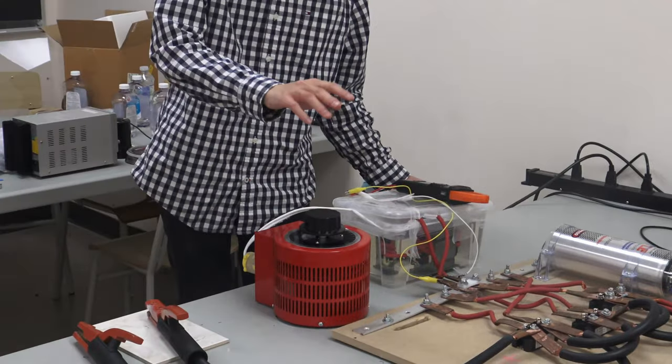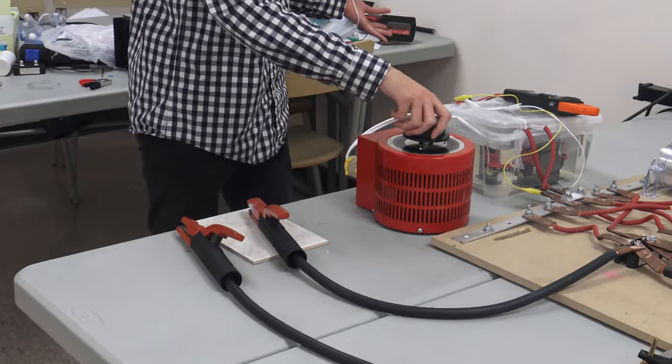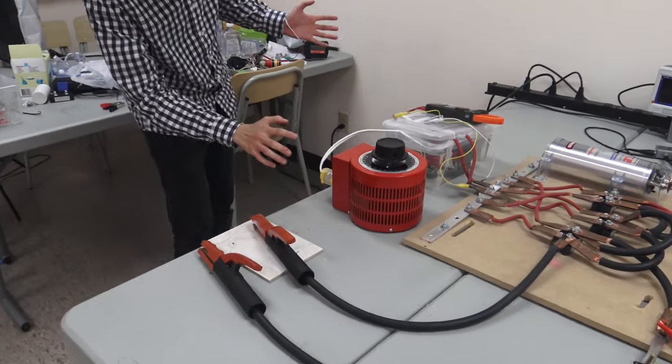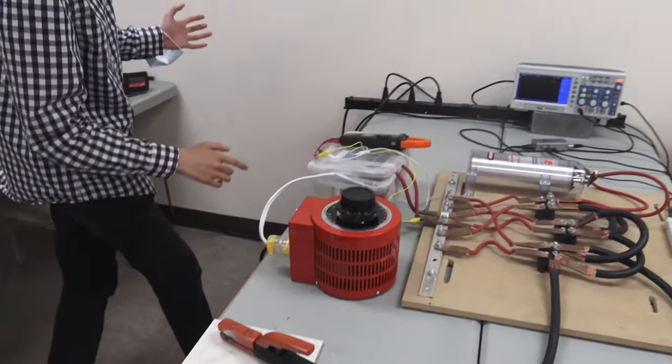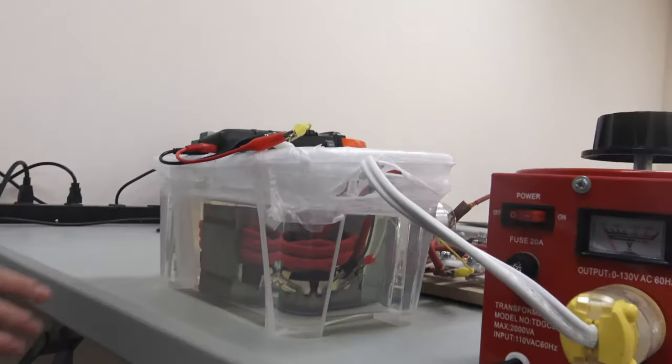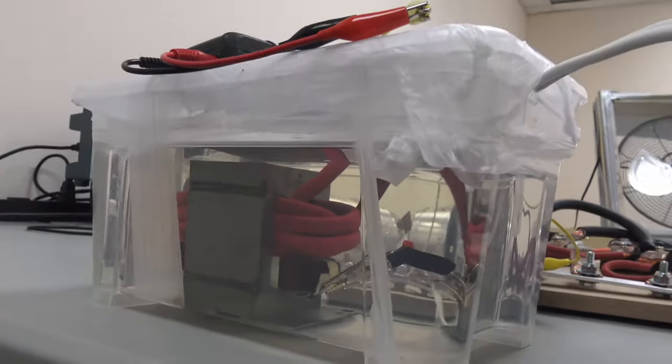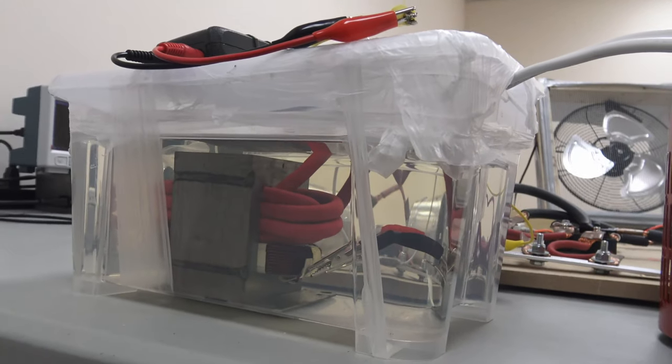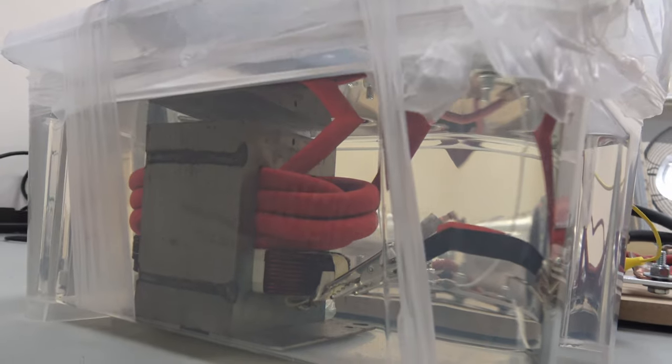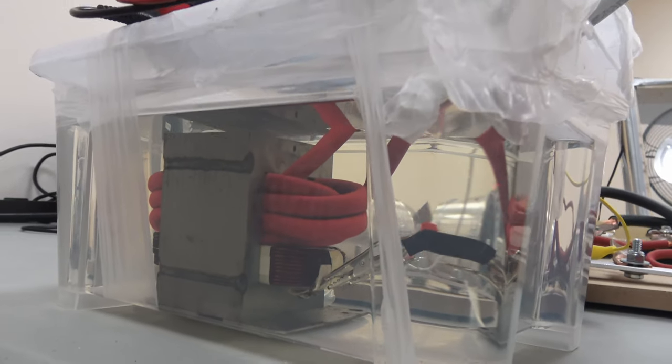And then this variac actually goes into our oil cooled high current transformer. So as you can see on one side, the primary, we have many many turns and then the secondary only has a few turns. So if you know anything about transformers, you will know that this will allow us to drop the voltage.